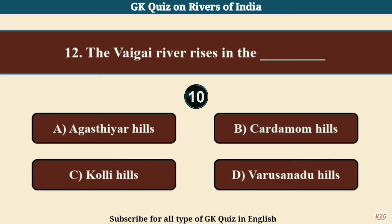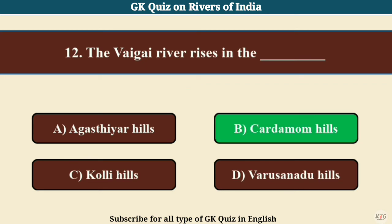Question No. 12. The Vaigai River rises in the? Answer B: Cardamom Hills.